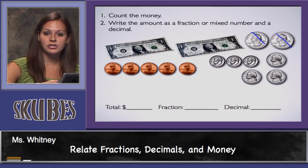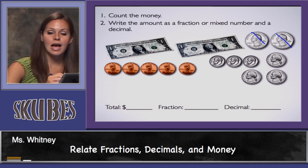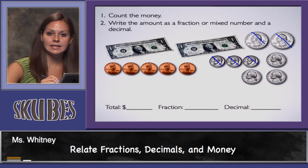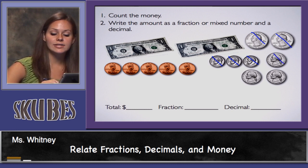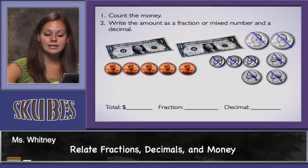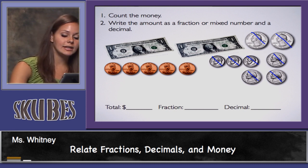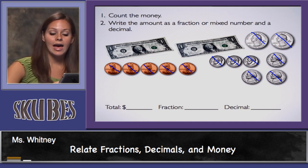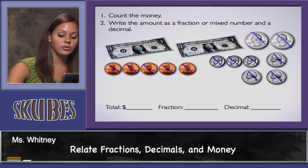Now I'm going to my next largest coin, which is the dime. I'm at 50 cents, now I count by tens: 60 cents, 70 cents, 80 cents. Next I'll count my nickels: 85 cents, 90 cents, 95 cents. Now I'll count my pennies: 1, 2, 3, 4, 5 pennies. Now I have one dollar in change. This totals to three dollars.